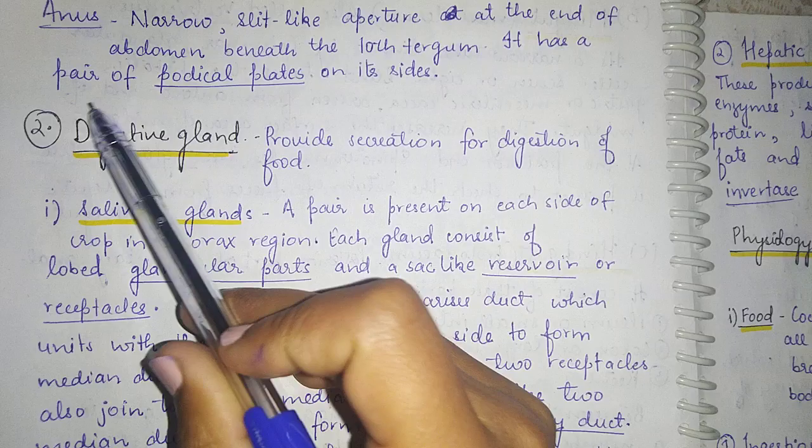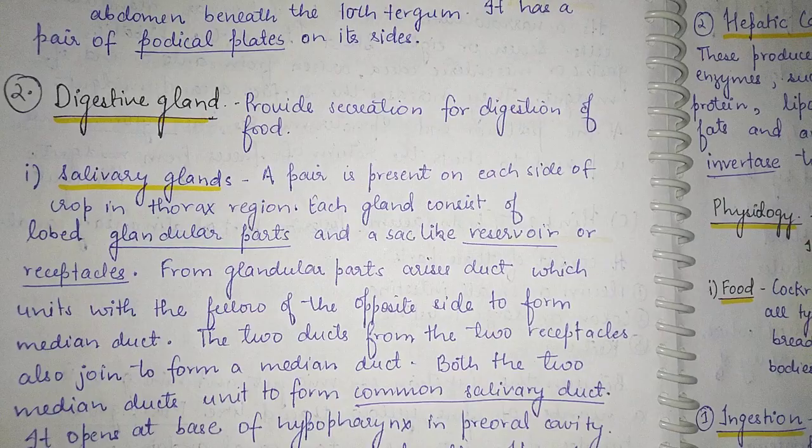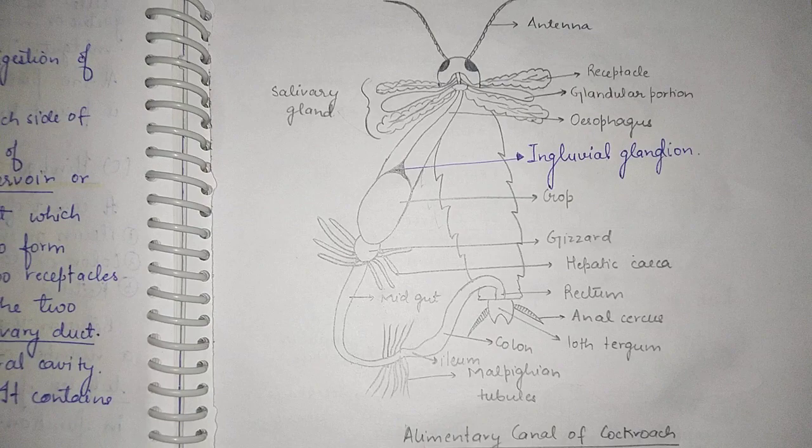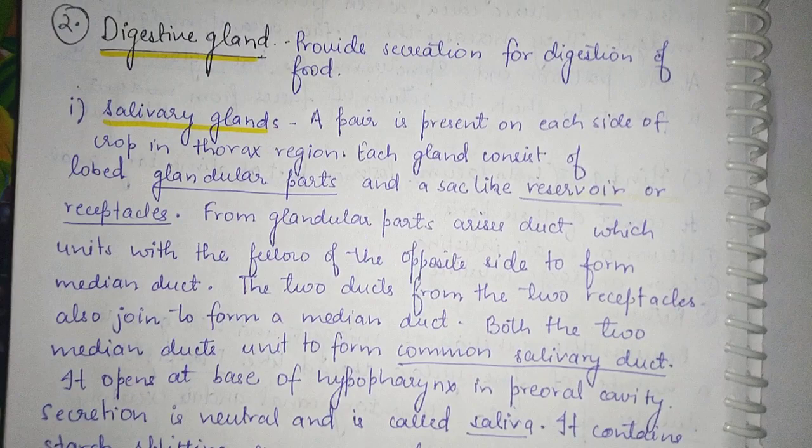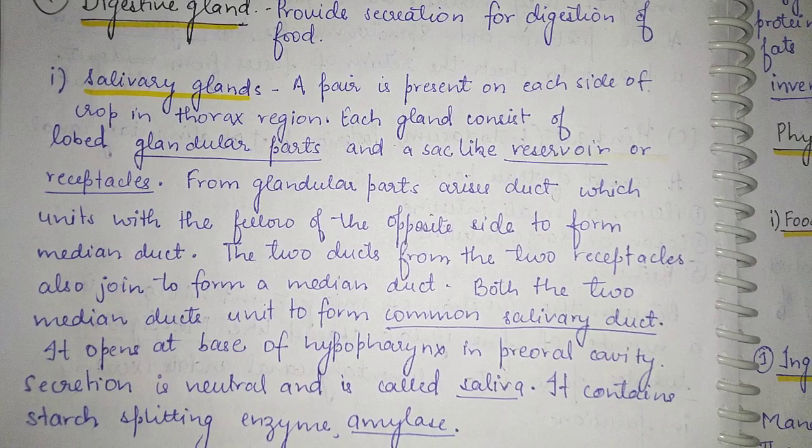The anus is a narrow slit-like aperture at the end of the abdomen, beneath the 10th tergum, and has a pair of paraproct plates on its sides. This completes the study of the foregut, midgut, and hindgut — the alimentary canal of the cockroach.